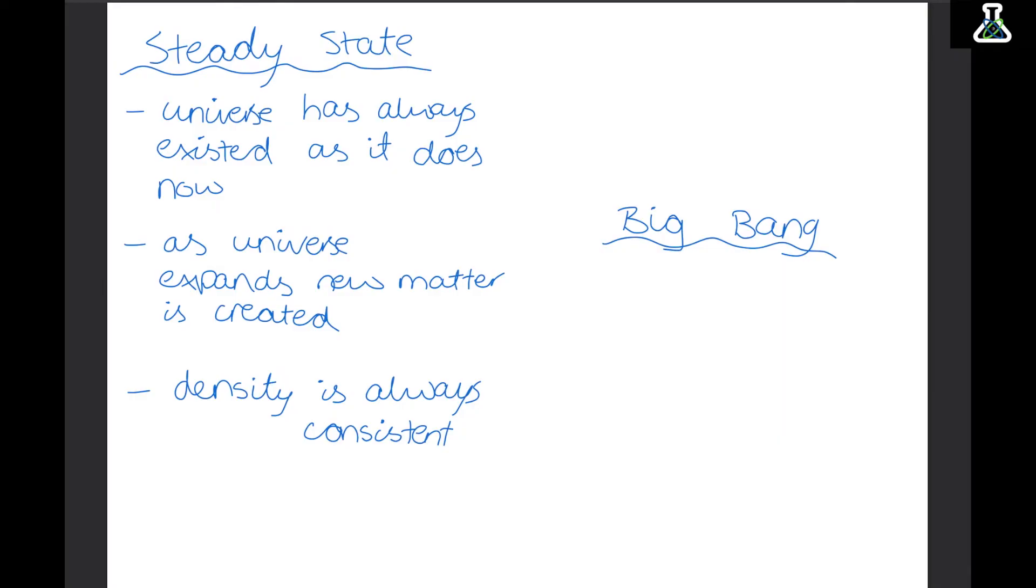The big bang theory says all of the matter in the whole universe once took up a really small space. So every star, every planet, every comet, everything in the whole universe was once all in a really small space. And this space was very dense and very hot. And then it says there was a really big explosion. All of the matter exploded apart and went in all different directions. And then the universe began expanding.